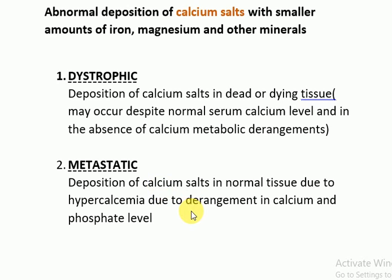Causes include increased mobilization of calcium from bone due to primary hyperparathyroidism, parathyroid adenoma, secondary hyperparathyroidism from parathyroid hyperplasia, malignancy, or immobilization. There may also be increased absorption of calcium from the intestine due to hypervitaminosis D, excessive milk intake, or idiopathic hypercalcemia of malignancy, or increased renal reabsorption due to thiazide diuretics.